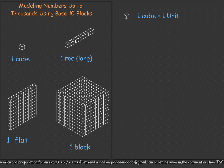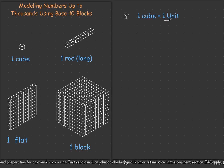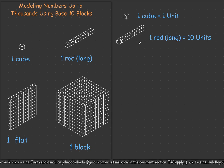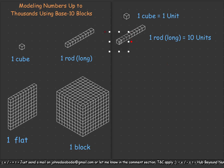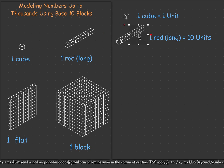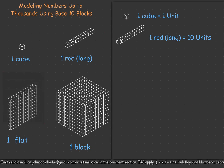If we have 10 of these cubes, we have what we call a long. A long is made up of 10 cubes. So if one cube is one unit, then a long — also known as a rod — will be 10 units. We can even confirm that: fitting a cube along the rod shows one, two, three, four, five, six, seven, eight, nine, ten. So a rod or long is made up of 10 cubes.